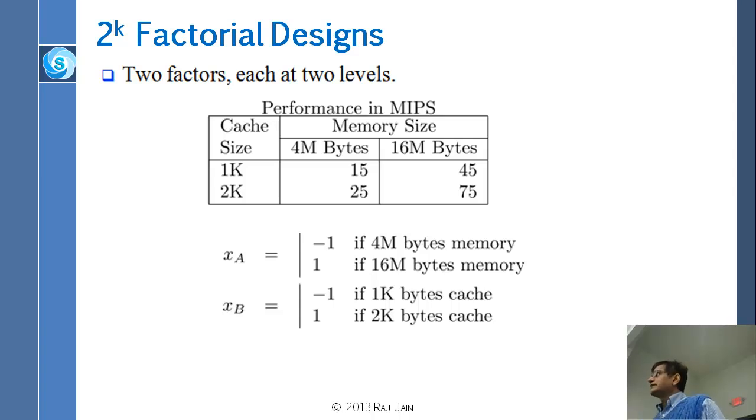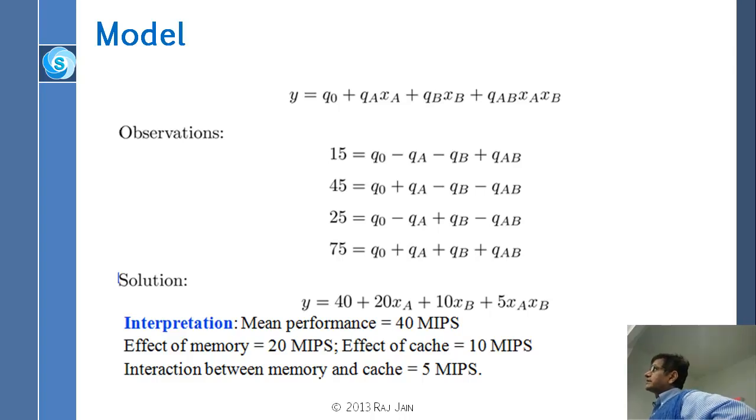Here is an example: we measure the performance in MIPS for 2 memory sizes and 2 cache sizes. We are going to have 2 variables. xa is minus 1 if this is the memory and plus 1 if this is the memory. xb is minus 1 if this is the cache size and plus 1 if this is the cache size. We could do a simple regression just like we did before and have the model which is y equal to q0, qa, qb, qab. We write down the 4 equations and solve these 4 equations for 4 unknowns, straightforward. You will get that y is equal to 40 plus 20 xa plus 10 xb plus 5 xa xb.